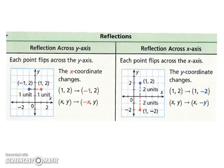Let's look at reflections. A reflection across the y-axis - each point flips across the y-axis. So the x coordinate changes. As you're flipping it across the y, the y is like your constant line, your line of symmetry. So your x is what's going to change. And the opposite for reflecting across the x-axis. Your x is your line of symmetry or your line of reflection. So that is what's going to be flipped over, so your y value will change.